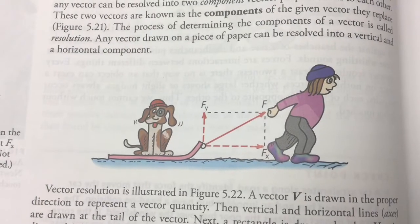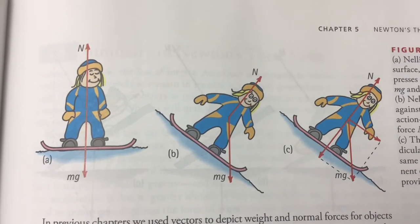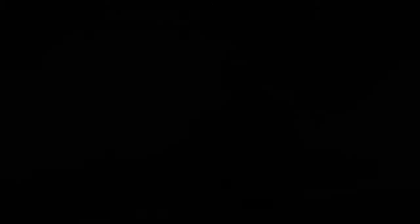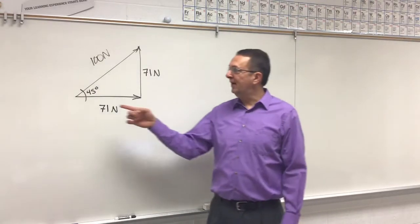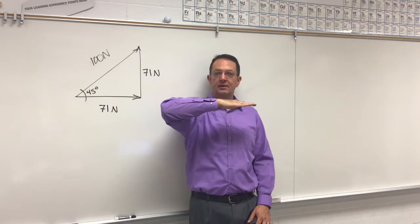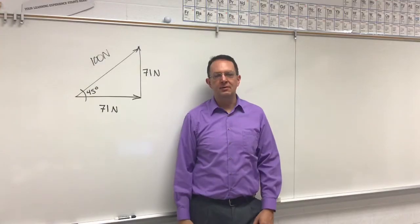There are other ways to draw these vector components. This is the parallelogram method. And as you can see, it will form two triangles. I'll be using the single triangle method. So once you solve this problem, you'll find that the two legs of this triangle are 71 newtons forward. Means that you're pulling forward with 71 newtons, and you're pulling upward with 71 newtons.